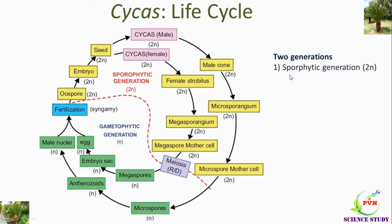First it is the sporophytic generation. This generation is also known as the diploid generation. The sporophyte is a highly developed male plant as well as the female plant. It is differentiated into root, stem, as well as leaves. It is an independent generation. It is heterosporous and therefore produces two types of spores.